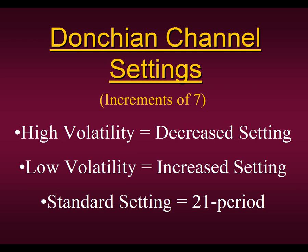The increments are 7, 14, 21, 28, and so on. Now in environments of high volatility — where the markets are really moving, there are large ranges on the stock, and the industrial average or S&P indexes have large daily bar chart moves — this is where we have high volatility. We want to decrease the setting, going anywhere from a 21-period down to a 14, even down to a 7-period Donchian Channel setting.